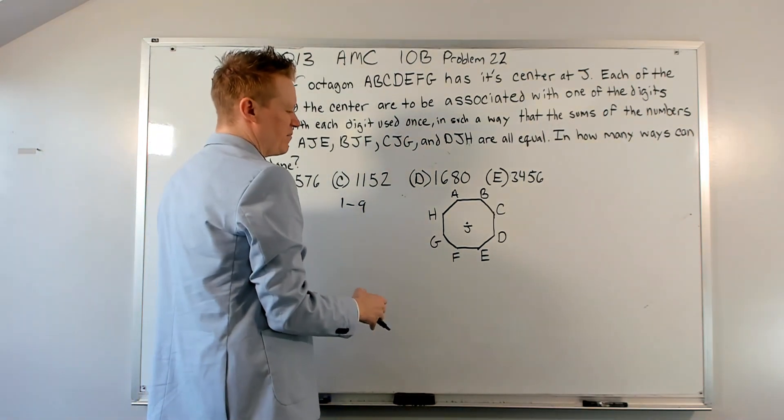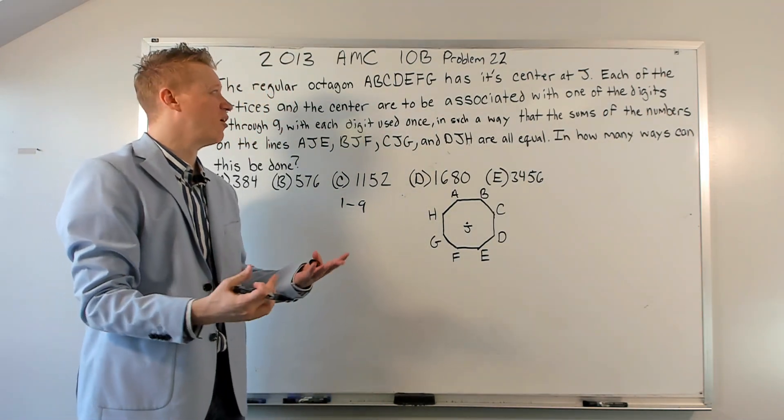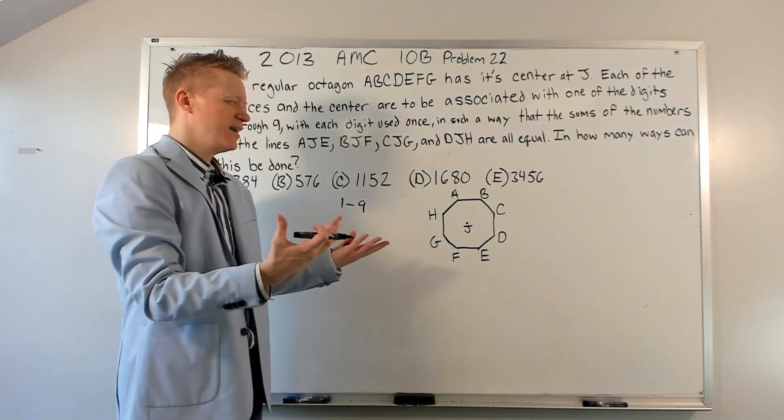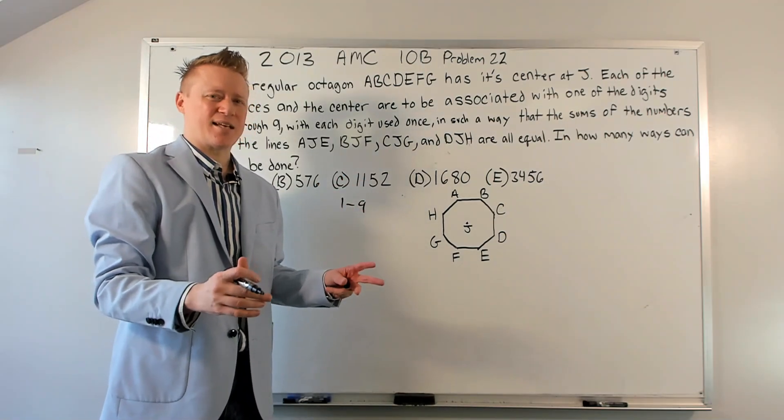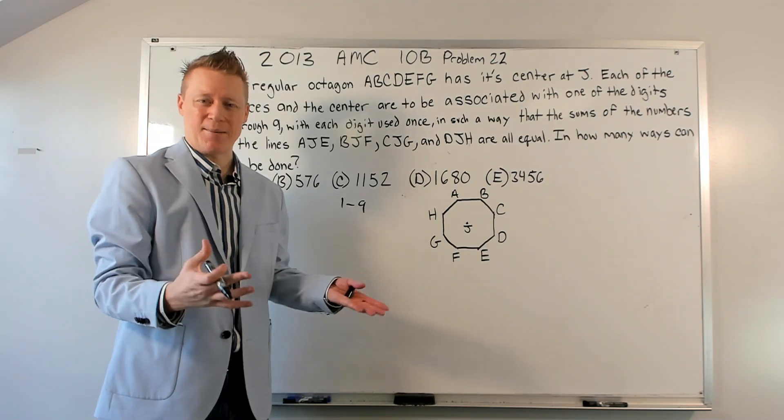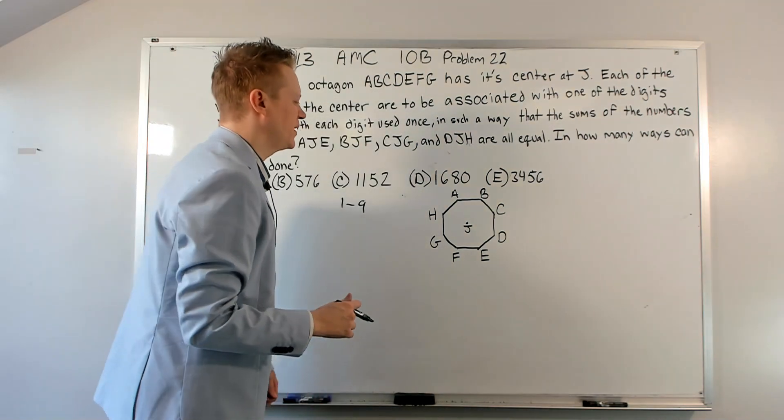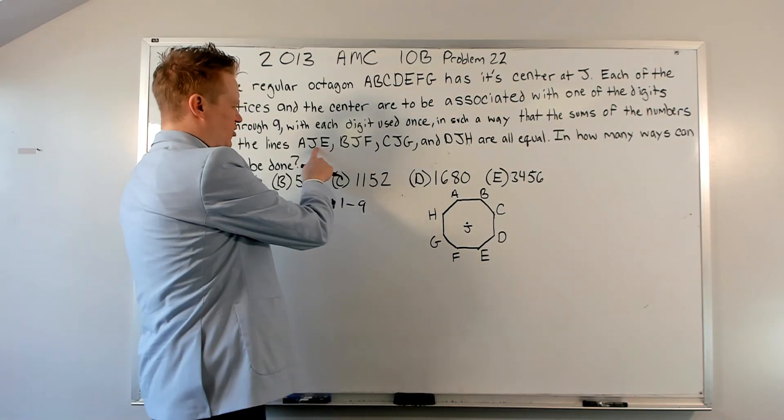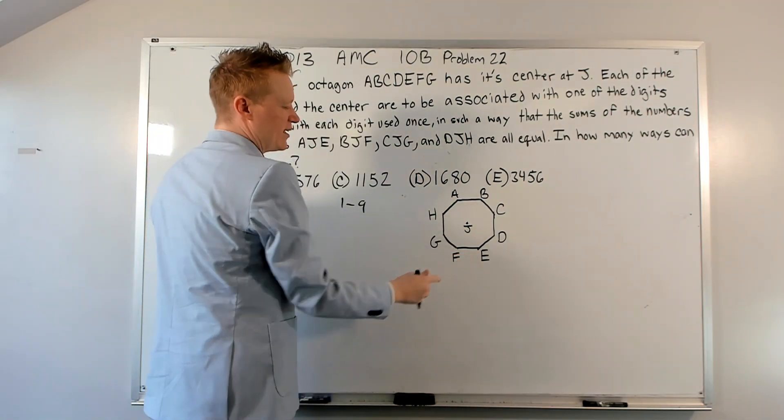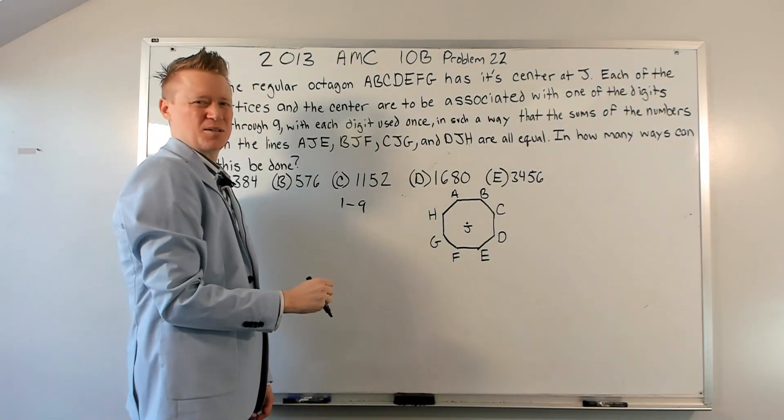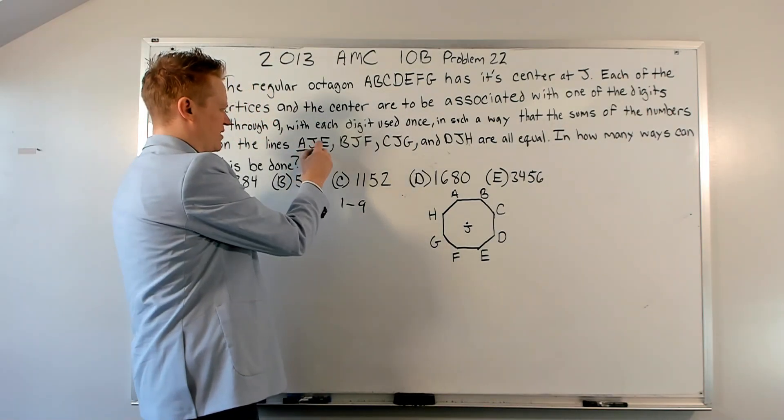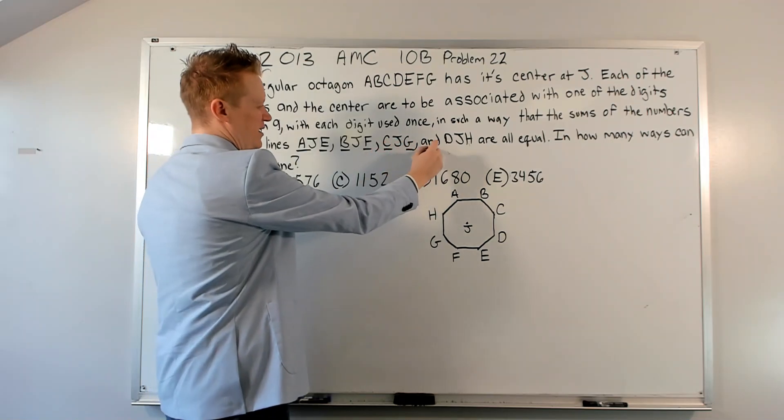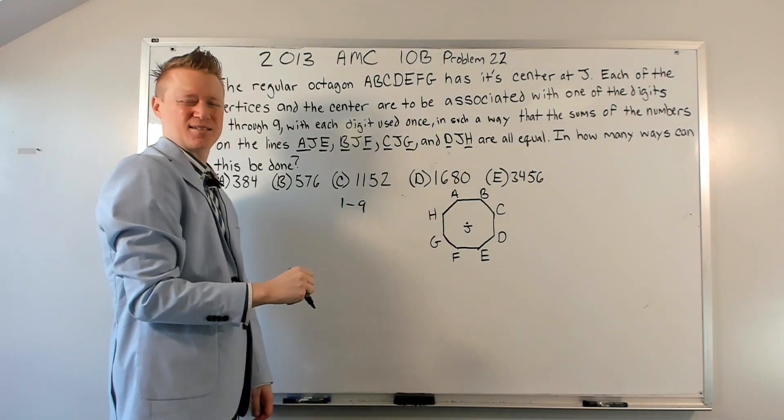Okay, so you might feel overwhelmed. It's problem 22. You kind of almost want to give up just then because I've never done one this late, perhaps, if that's you. But we just kind of got to give it some thought. You'll notice that J appears in all of these, right? AJE. So it's not really the most important part. What really matters is that A and E, B and F, C and G, and D and H add up to the same amount.